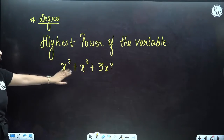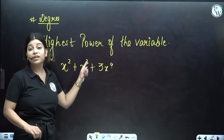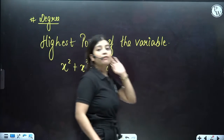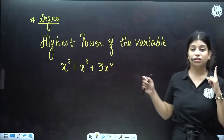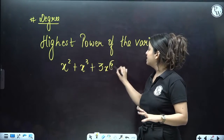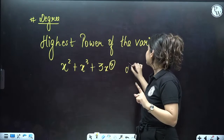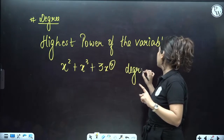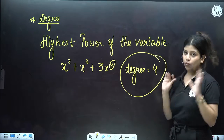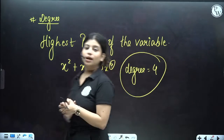We can see that the power of the variable here is 2, here is 3, and the power of the last variable x is 4. Among all these powers, 4 is the maximum one, so we say the degree of the polynomial is 4. I hope this is clear with everyone.